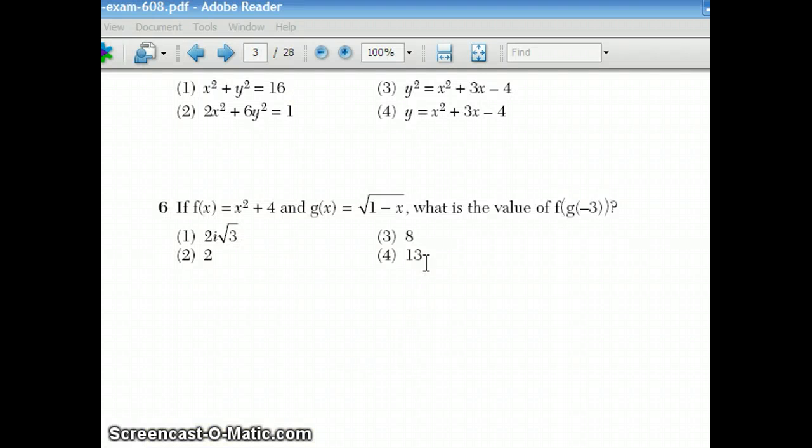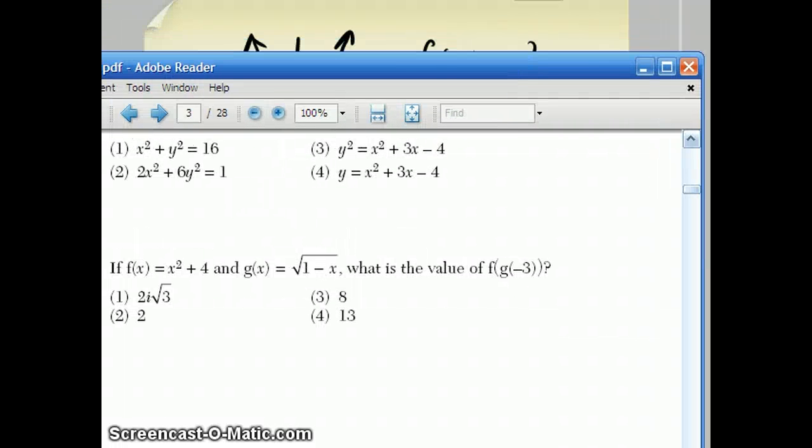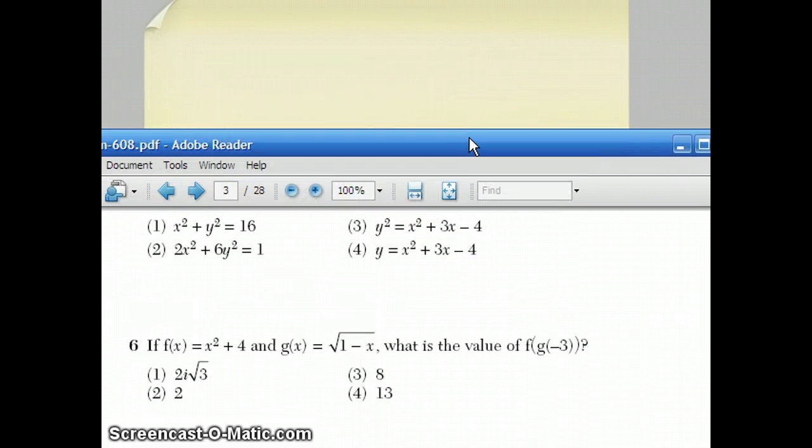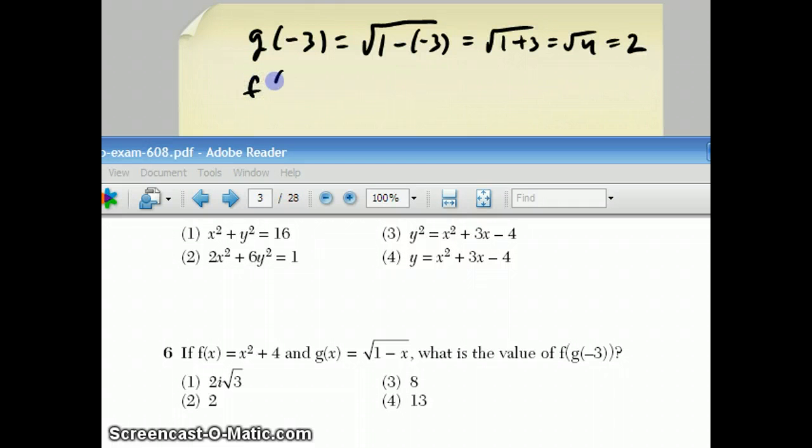Question 6 here asks you to do what's called composition of functions. What's f(g(-3))? So what we're going to do is we're going to put -3 into the g function. g(-3), since g(x) is 1 - √(1 - x), let's see. So g(-3) is the square root of 1 - (-3), which is the same thing as the square root of 1 + 3, which is the square root of 4, which is 2. So f(g(-3)) is the same thing as f(2). f(2) is 2^2 + 4, which equals 8.